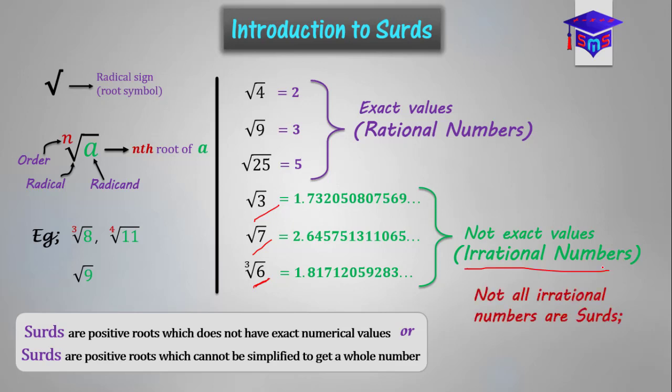Not all irrational numbers are surds — you have to take note of that. All these are irrational numbers, but it's only those with a radical sign that are surds. E and pi are not surds.